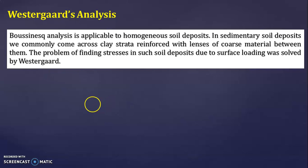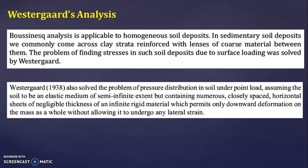Westergaard in 1938 solved the problem of pressure distribution in soil under point load by assuming the following: the soil mass is an elastic medium; the modulus of elasticity (Young's modulus) of soil is constant; the soil mass is semi-infinite in extent, meaning it is bound by the ground surface and extends infinitely in all other directions; and the soil mass is laterally reinforced by numerous closely spaced horizontal sheets of negligible thickness of an infinitely rigid material, which prevent the mass as a whole from undergoing any lateral strain.